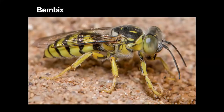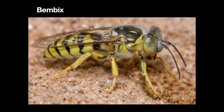Many wasps mimic other wasps, especially social wasps like Vespula, because they are the most aggressive — they have large nests filled with larvae and defend them aggressively. Whereas the average wasp, like the one shown here, is solitary. This is a form of what's called Müllerian mimicry.